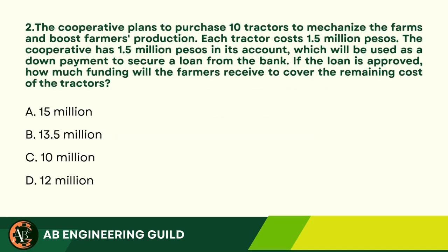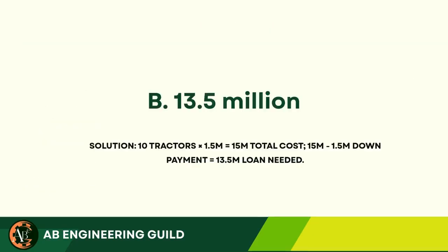Question 2. The cooperative plans to purchase 10 tractors at 1.5 million pesos each. They have 1.5 million pesos in their account as a down payment. How much more do they need to loan? A. 15 million. B. 13.5 million. C. 10 million. D. 12 million. Answer: B. 13.5 million. Explanation: Total cost is 15 million. Subtract the 1.5 million down payment, the remaining loan is 13.5 million.